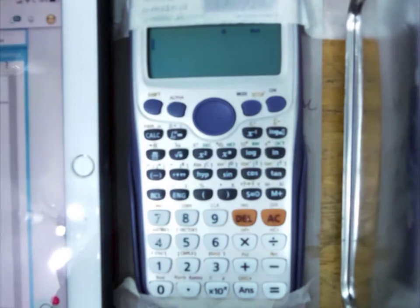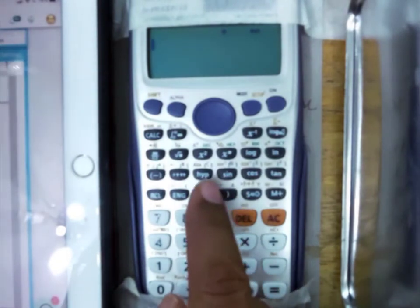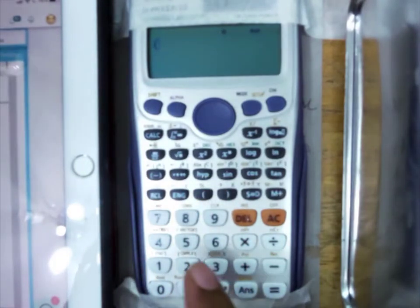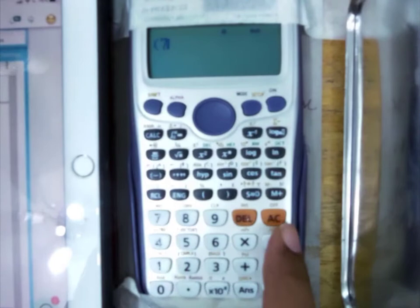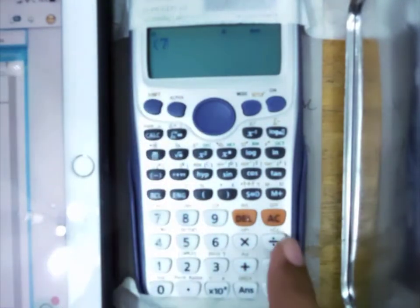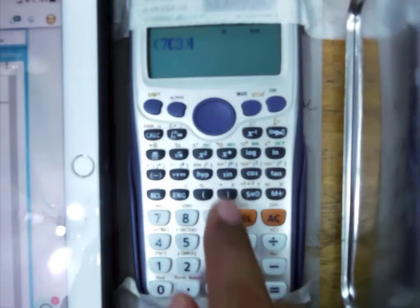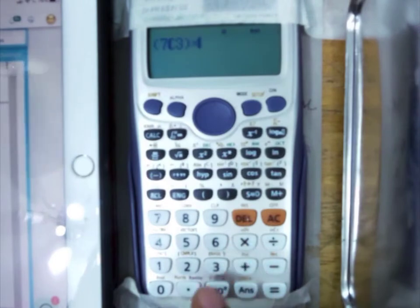First, we need to select from 7 men, we need to select 3. From 7 men, select 3. So 7, shift 3, close, times.